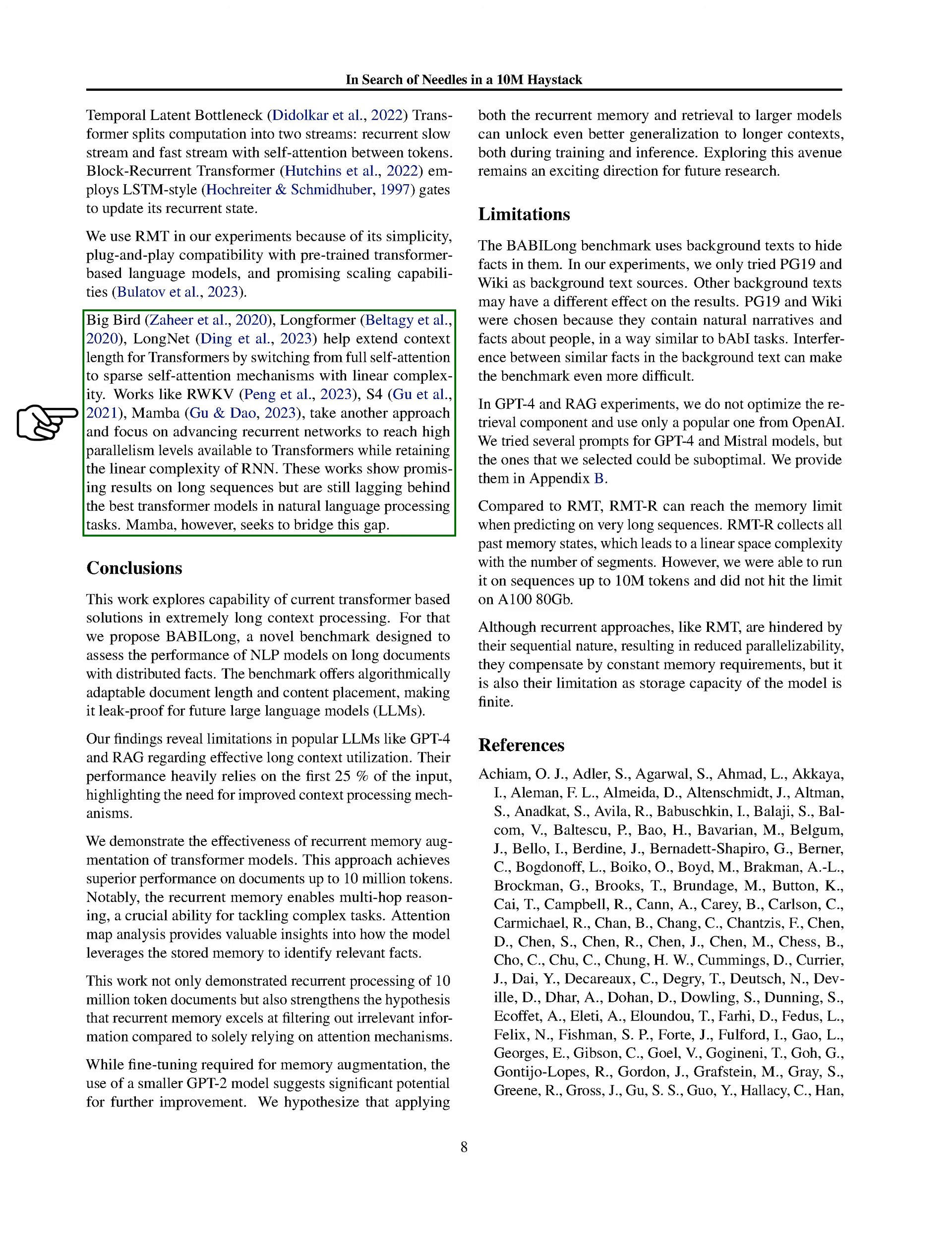Finally, we mention other approaches to extending context length for transformers, such as BigBird, Longformer, and LongNet, which employ sparse self-attention mechanisms. Additionally, works like RWKV, S4, and Mamba focus on advancing recurrent networks to achieve high levels of parallelism while maintaining linear complexity, showing promising results on long sequences but still trailing behind the best transformer models in NLP tasks. Mamba, in particular, aims to close this gap.